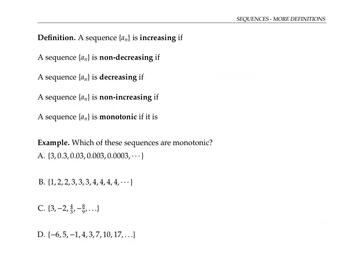We say that a sequence is increasing if each term is less than the next term — that is, a sub n is less than a sub n plus one for all n. A sequence is called non-decreasing if each term is less than or equal to the next term, so a sub n is less than or equal to a sub n plus one for all n. Non-decreasing is like increasing, it's just that we allow equality between two consecutive terms.